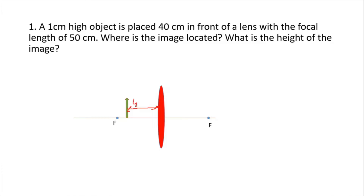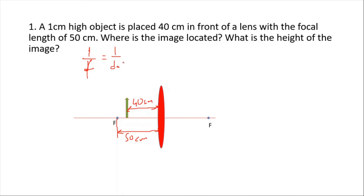The object is placed 40 centimeters from the lens and the focal length is 50 centimeters. Let's first find the image distance. As you see, the object is between the focal point and the lens, so the image is going to be a virtual image and it will be on the same side as the object. We expect to find a negative image distance.